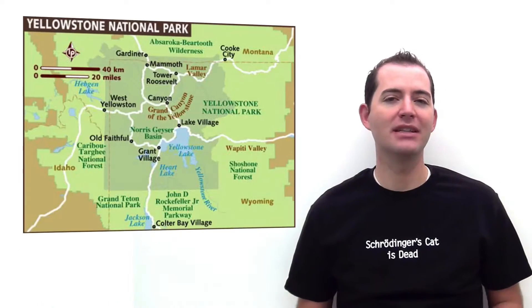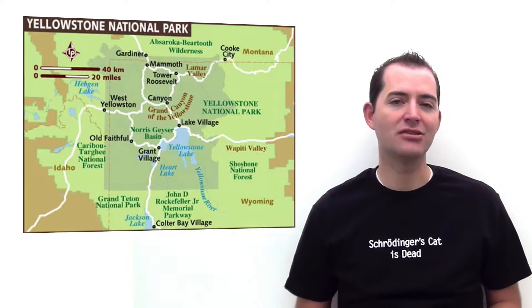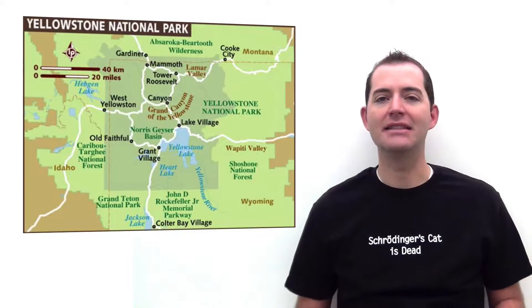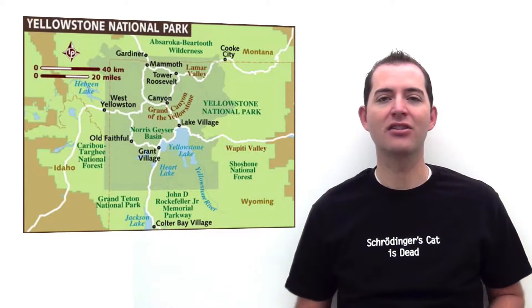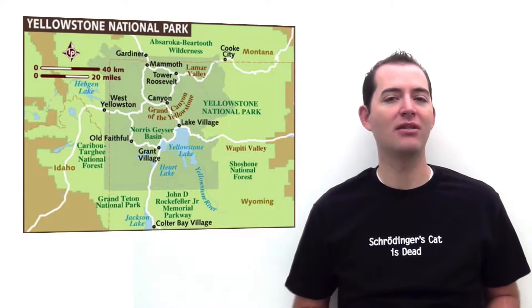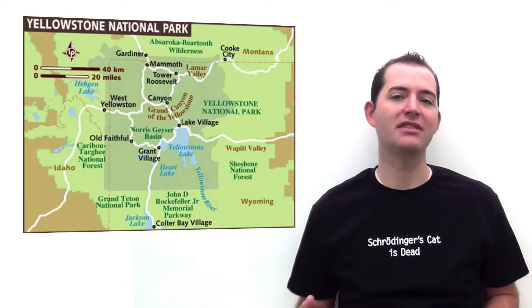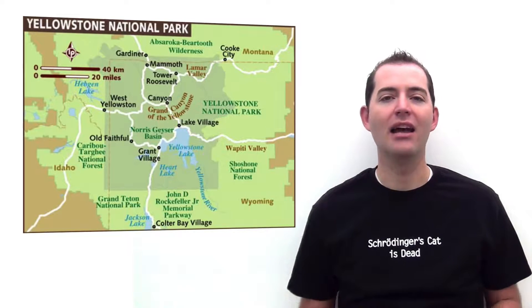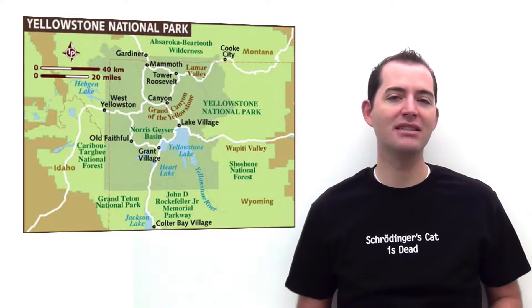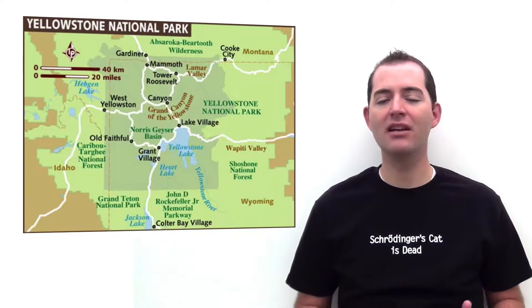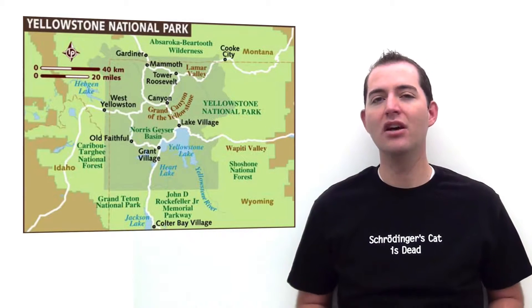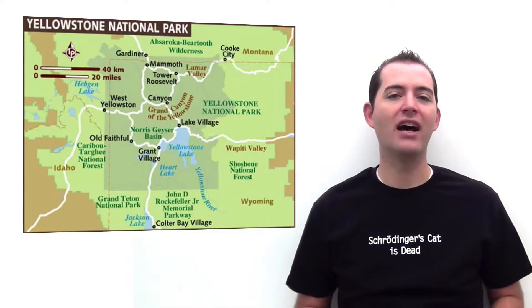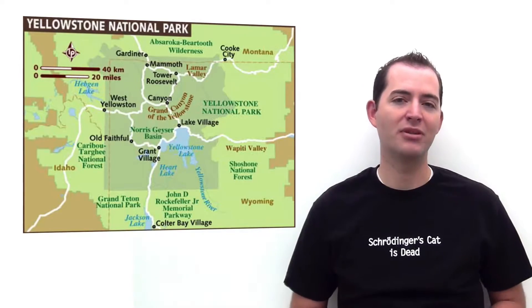One example is Yellowstone National Park. It's likely that the current climate found there will shift several hundred miles north, and many of the species found in Yellowstone will not survive in these unprotected areas.